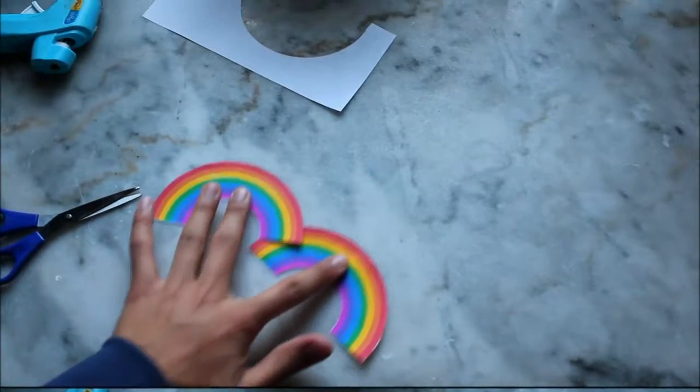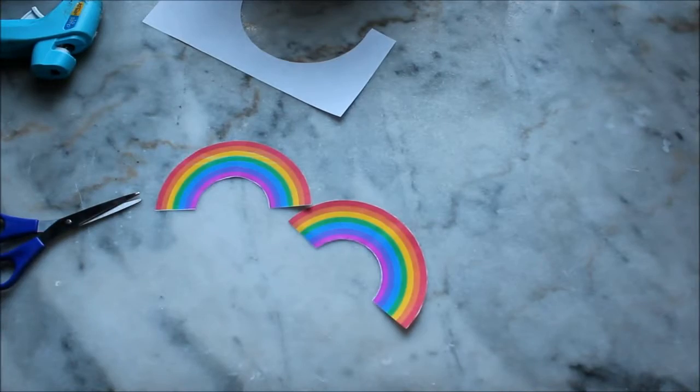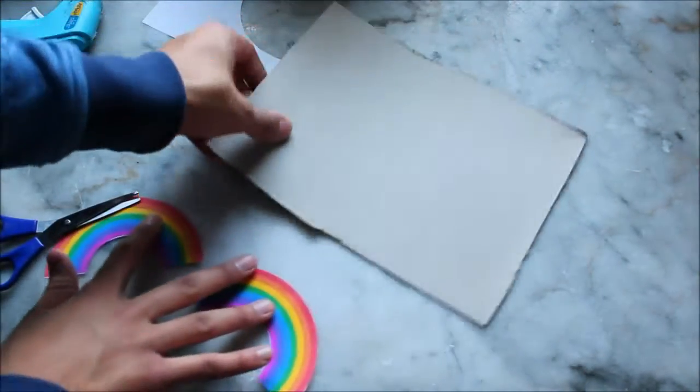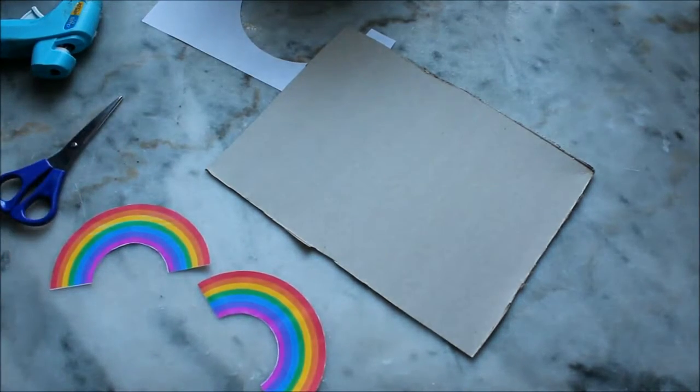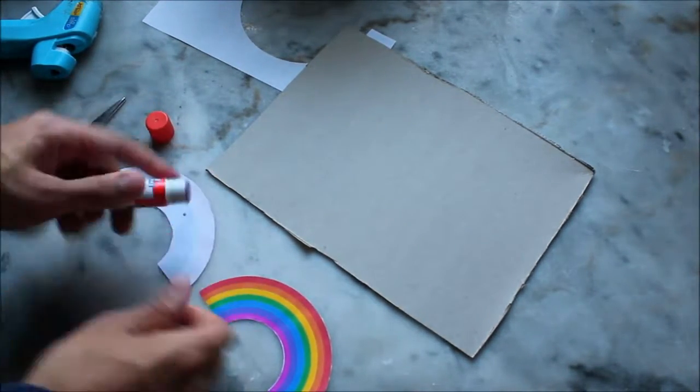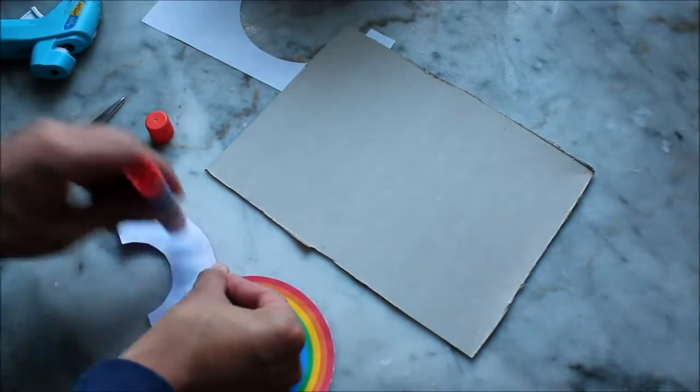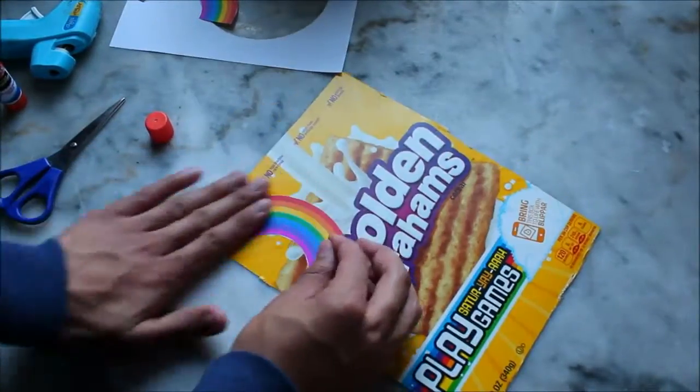After you cut out your two rainbows, you're going to take some cardboard. I just used one side of a cereal box and you're going to glue your two rainbow bridges on the side of the cardboard with the design.